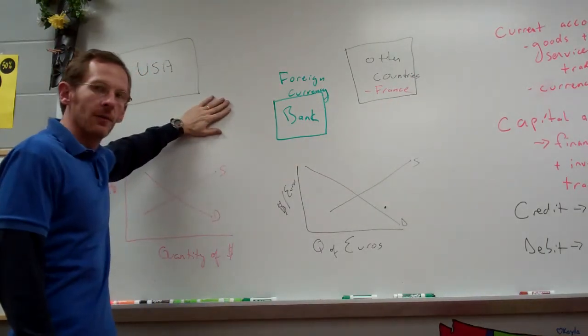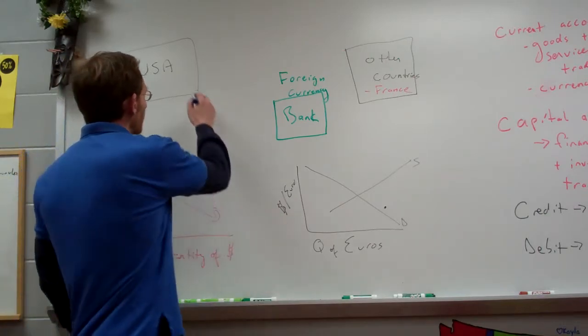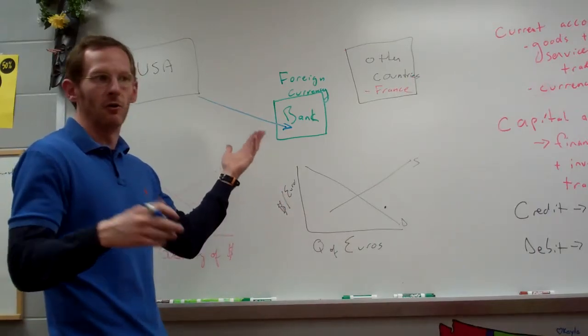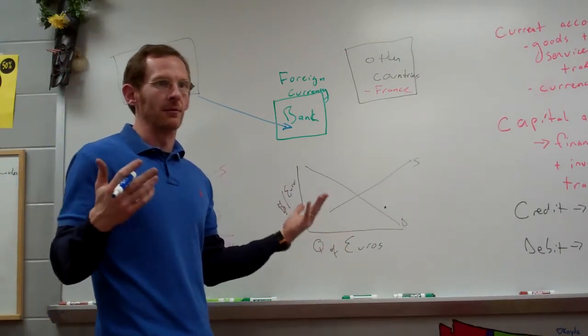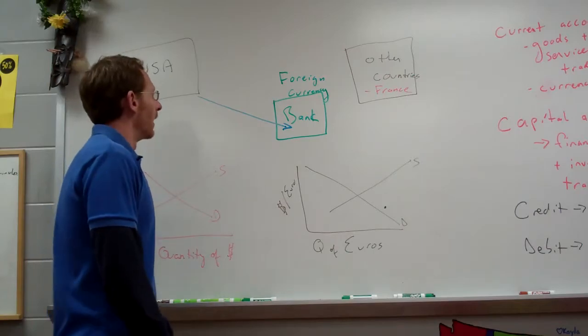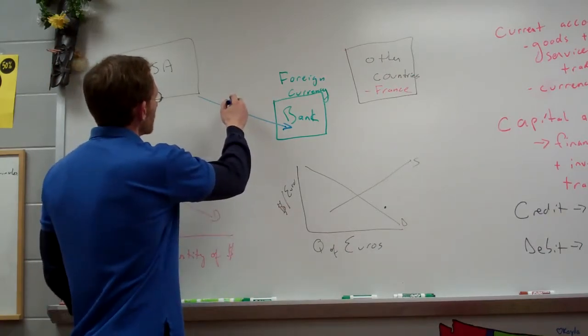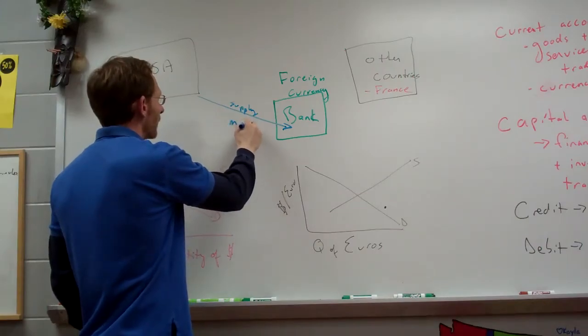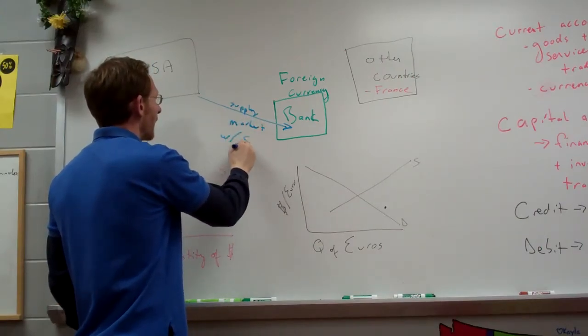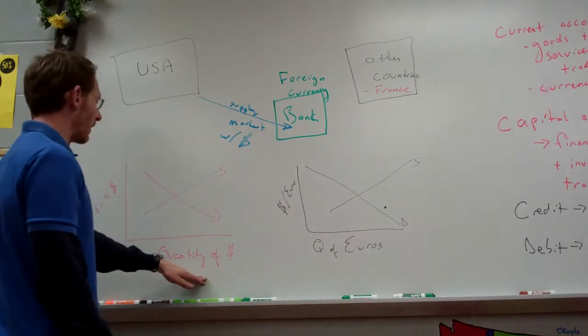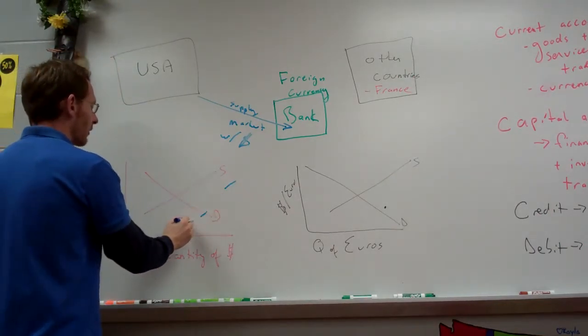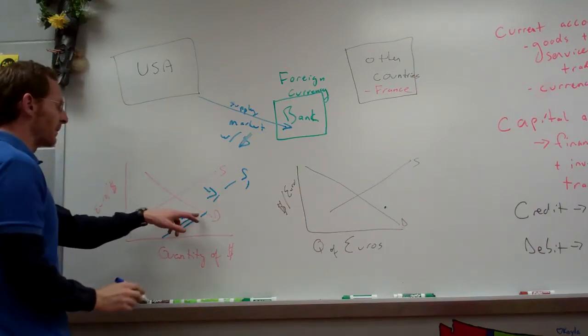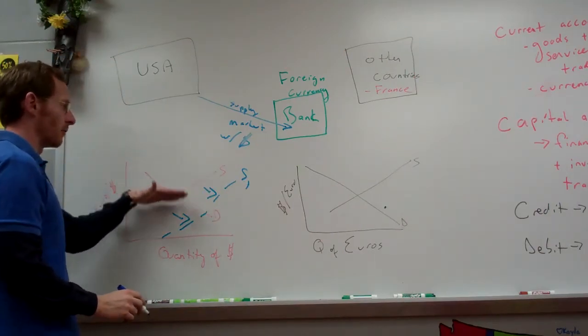So we in America have dollars. What will happen is, we will take our dollars to the World Currency Bank. Many banks in New York or any big city has a currency bank. So we will supply the market with dollars. If this is the quantity of dollars, we have increased the supply of dollars, which has depreciated the value of our currency that dropped the price.